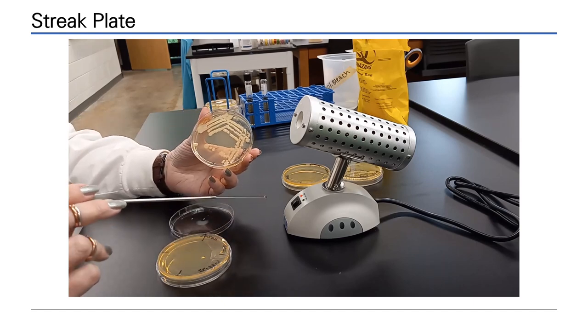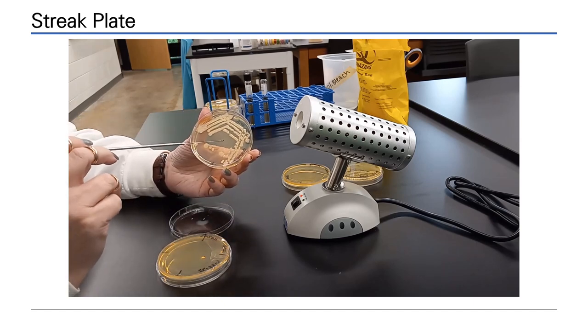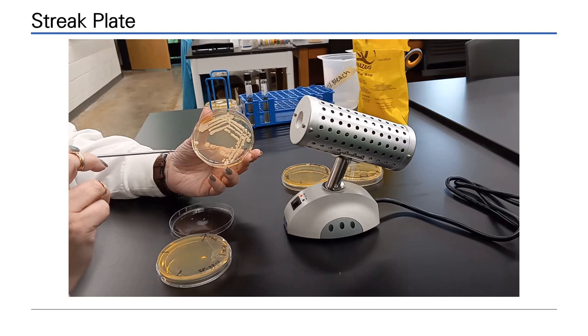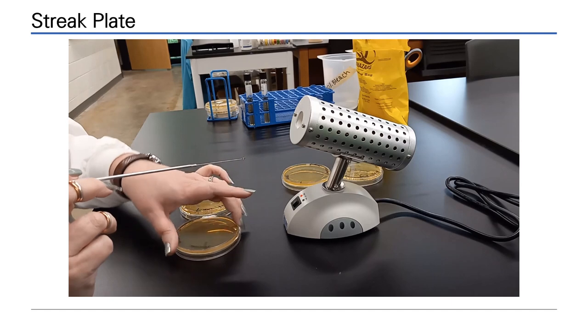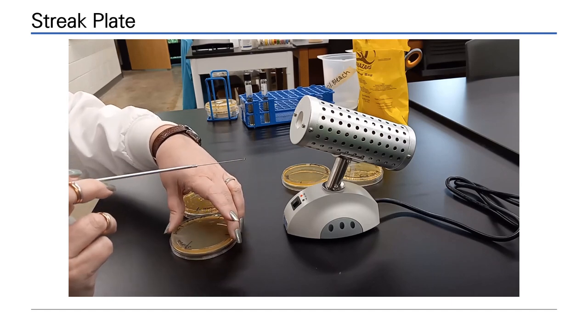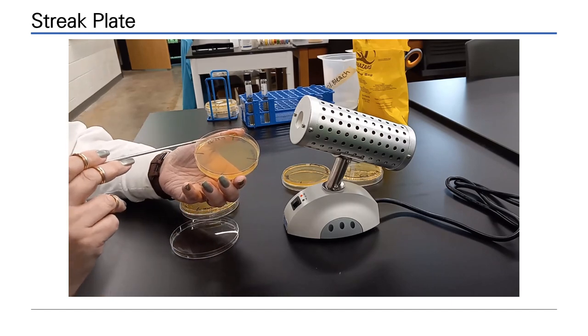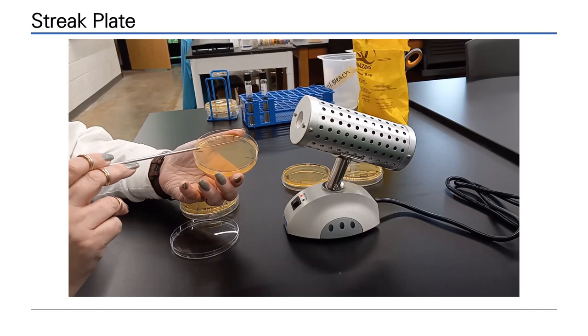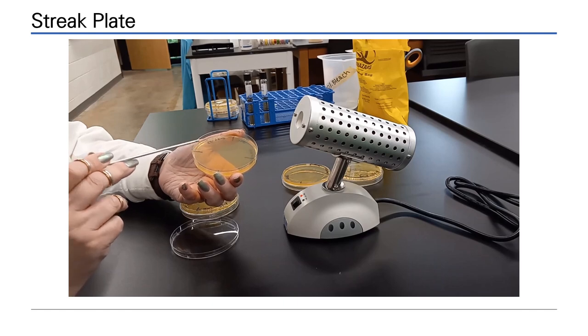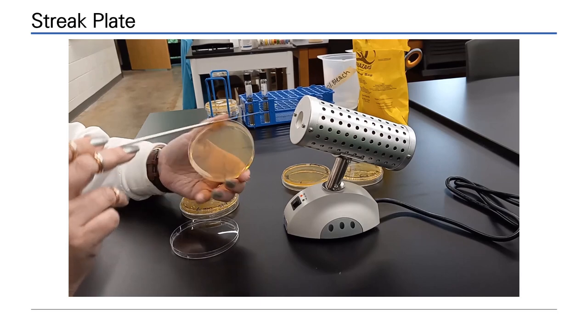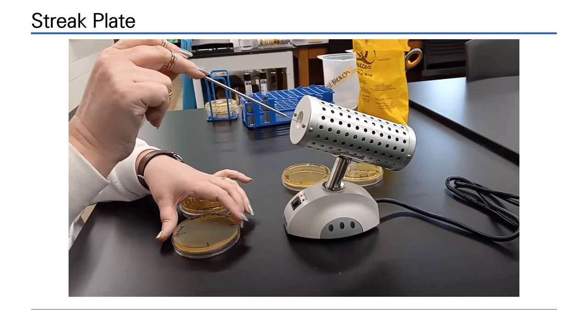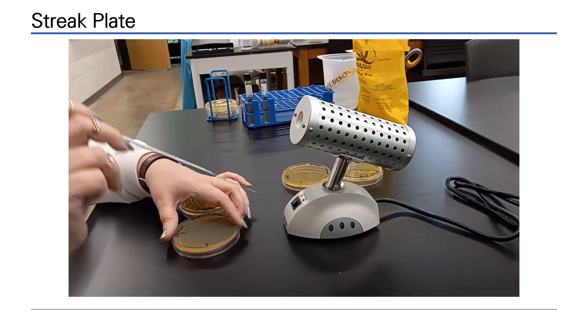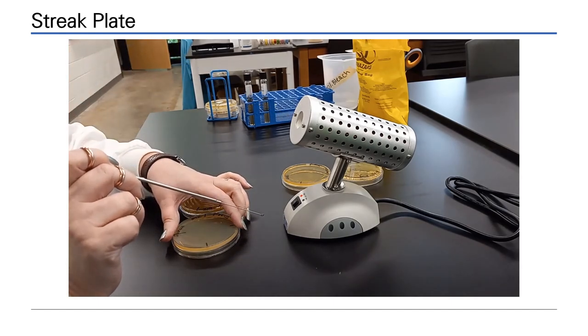Now the staph aureus will be inoculated. Notice how the loop is touched to the center region of the plate. This is just a check to make sure that the loop is cool. Only touch the loop to a sterile region of the plate if you want to perform this check. Watch each step again, how the plate is streaked, the loop is sterilized and the next quadrant is streaked.